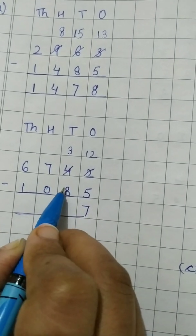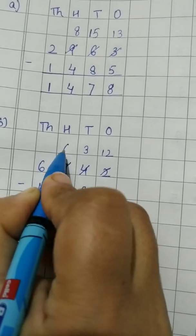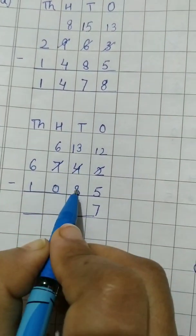Now 3 minus 8. 3 minus 8 not possible. So it will borrow from this 7. This 7 will become 6. And 3 will become 13. 13 minus 8.